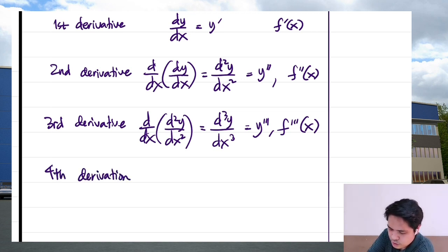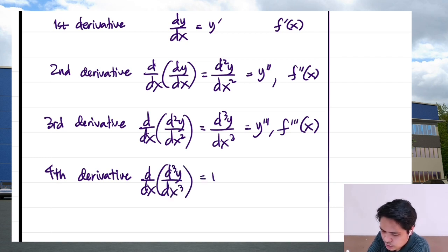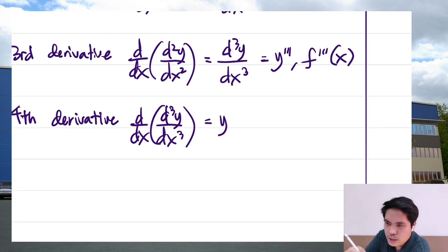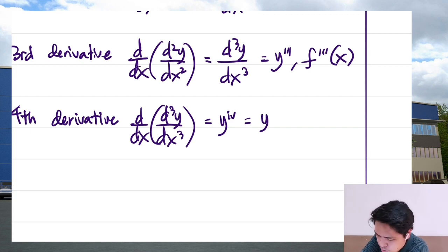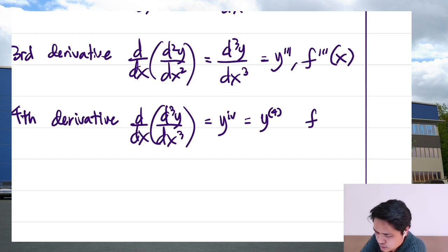The fourth derivative is just the derivative of the third derivative, written as d/dx of d³y/dx³. Since we can't keep adding primes, we use Roman numerals. So y to the fourth is written with a lowercase Roman numeral IV, meaning the fourth derivative.